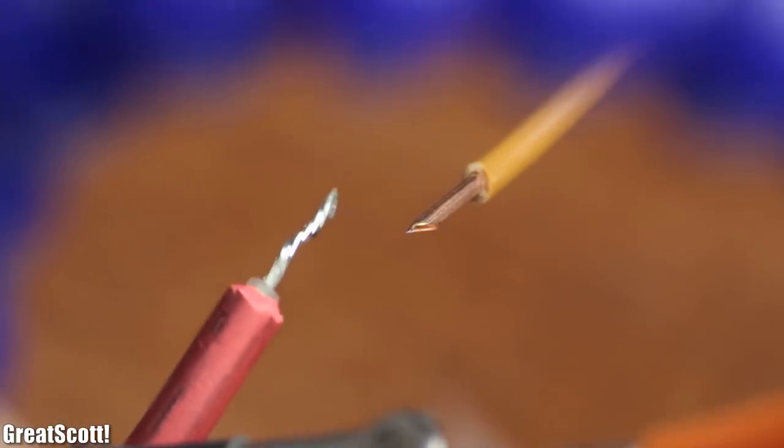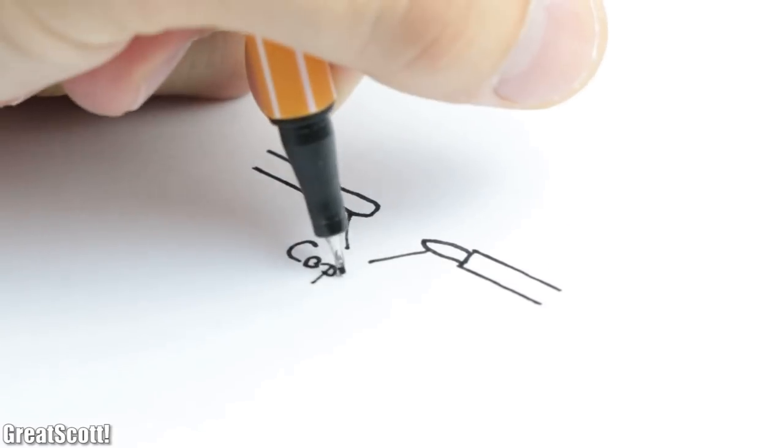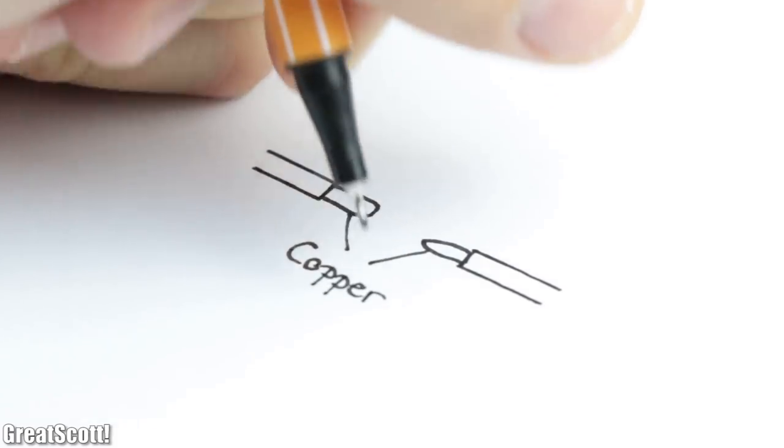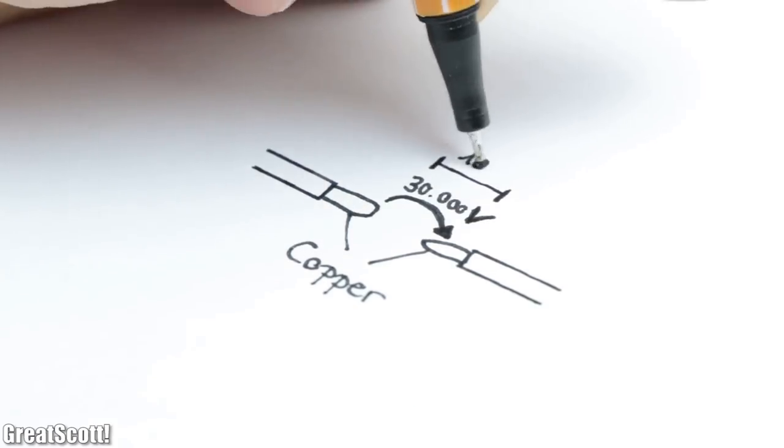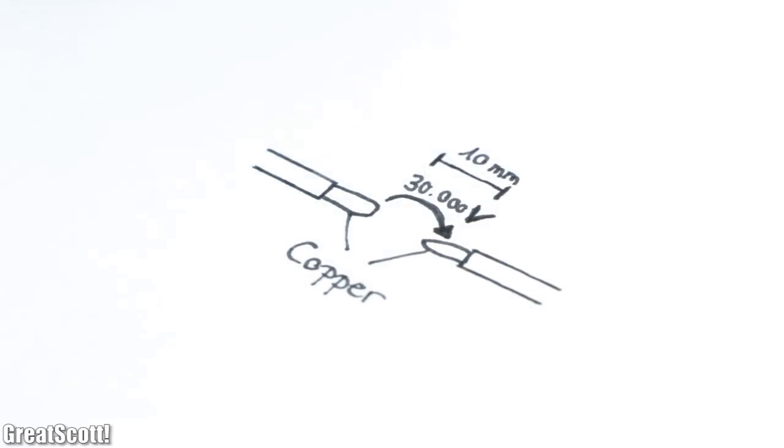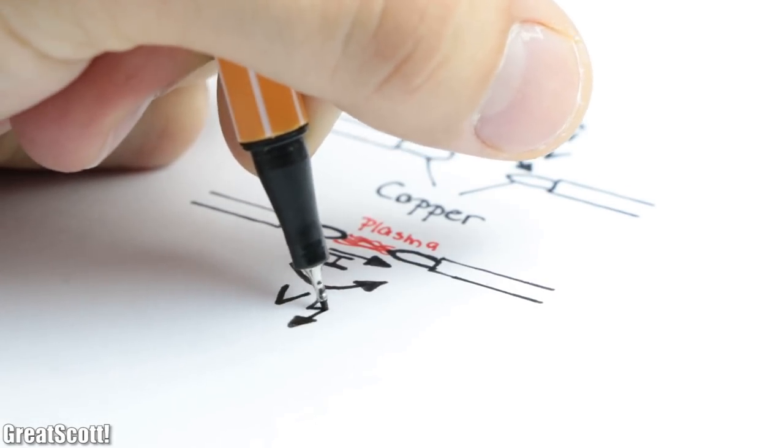First off, how can we create this plasma arc? Well, we need a high electric field strength between two conductors with an approximate voltage of around 30,000 volts per centimeter of distance. Which brings me to the obvious warning for this kind of high voltage project.